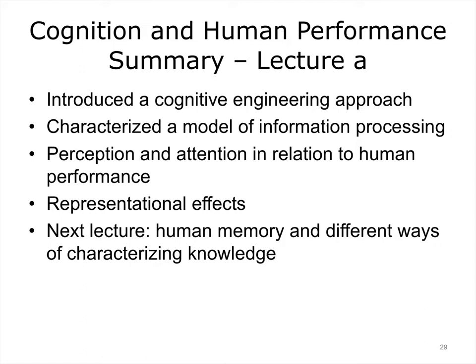This concludes Lecture A of Usability and Human Factors, Cognition and Human Performance. In this lecture, we explored different facets of human cognition in the context of a cognitive engineering approach. We introduced a basic model of human information processing and introduced issues pertaining to perception and attention. We also characterized how different kinds of representations can significantly affect the kinds of inferences that people make. The same information can be expressed in very different ways. In the next section, we will discuss issues relating to human memory and characterize different ways to characterize knowledge.